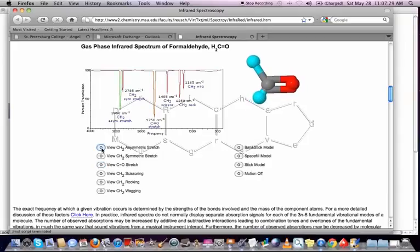Let's take a look at the CH asymmetric stretch. So that's one H going in, one H going out, and you can see that that one occurs at about 2850 wave numbers. The symmetric stretch occurs at about 2800 wave numbers.